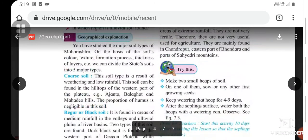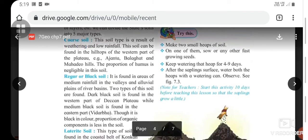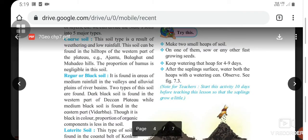Geographical explanation: You have studied the major soil types of Maharashtra. On the basis of soil colors, texture, formation process, and thickness of layers, we can divide the state soil into five major categories. First is coarse soil. This soil type is a result of weathering and low rainfall. This soil can be found in the hilltops of the western part of the plateau, for example Ajanta, Balaghat, and Mahadev hills. The proportion of humus is negligible in this soil.